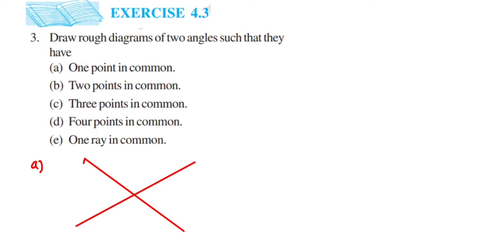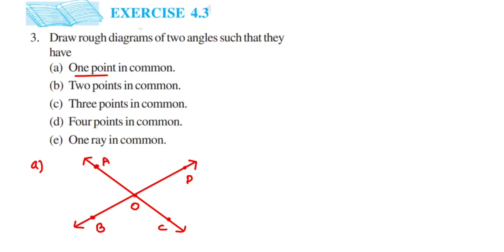So we are going to take two angles. Suppose there is a point A, point B, point C, point D, and at the intersection point O. They want only one point common. So if you see angle AOB and angle COD, then O is the one point which is common.